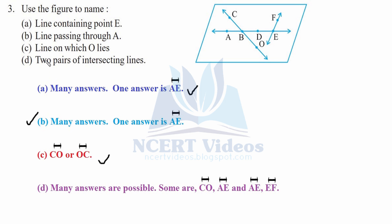Part d: two pairs of intersecting lines. There are many possible answers. CO and AE are intersecting lines; you can also write it as OC and EA. Another pair is AE and EF, which can also be written as EA and FE. There are many possible answers for this part.